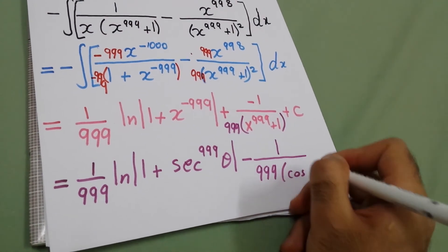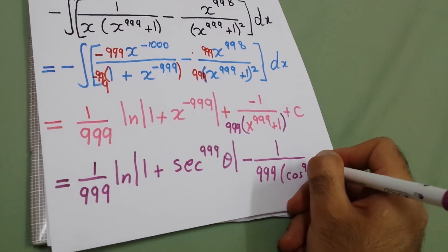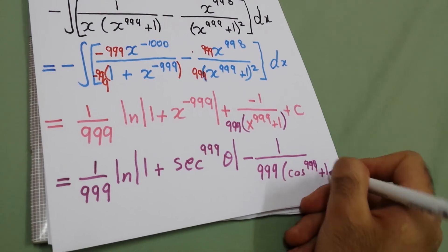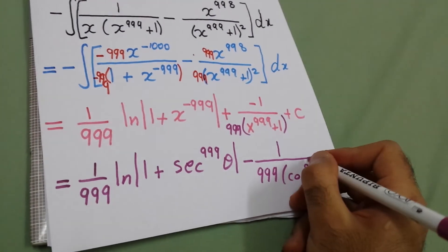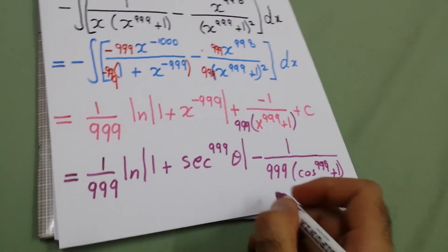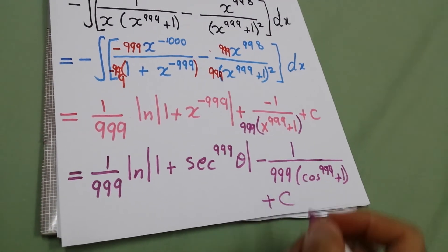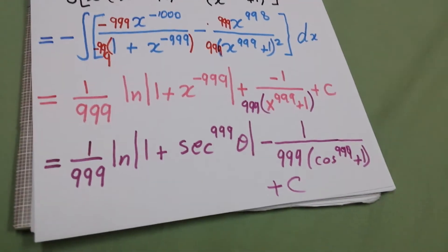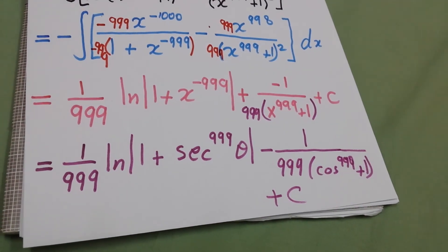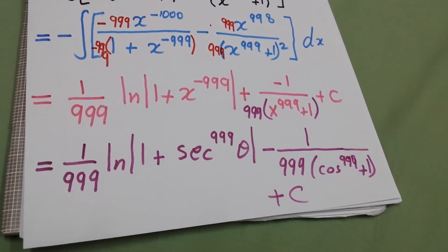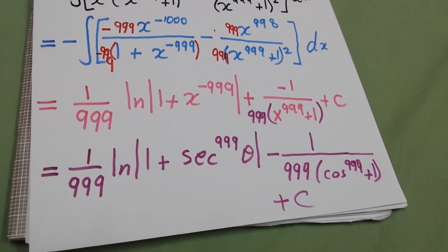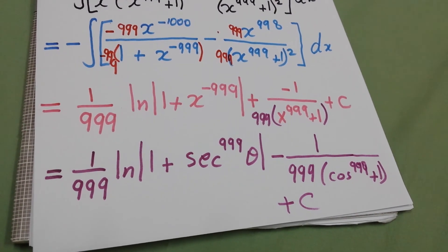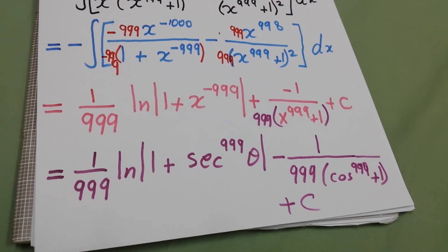The final answer involves cosine to the power 999 over cosine to the power 999 plus one, plus constant. Thank you for your attention, and if you have cool integrals please write them in the comments — thank you!